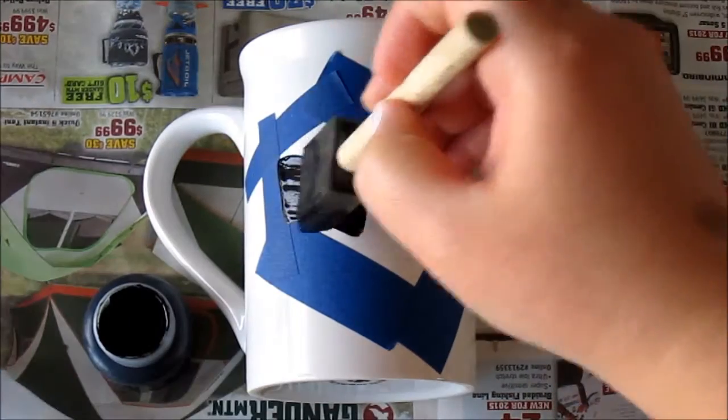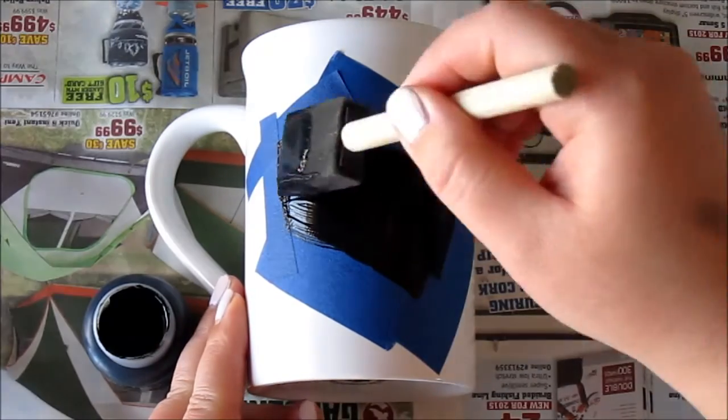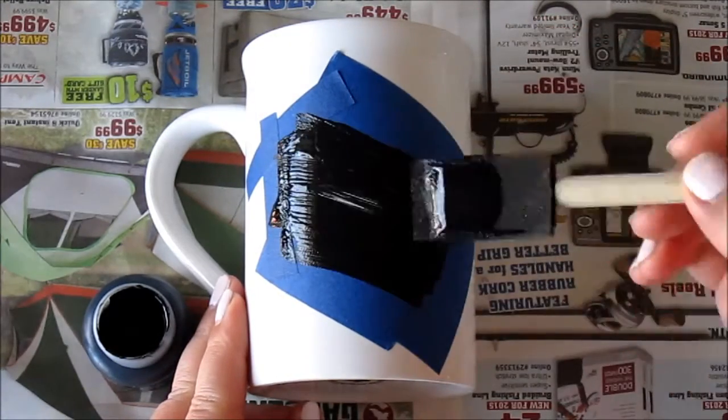We are now going to add the first layer of chalk paint. Once you're complete go ahead and let it dry for 15 to 20 minutes.